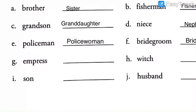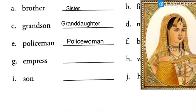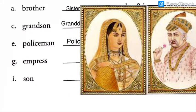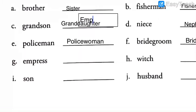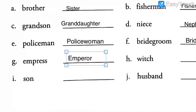Question G: empress. Empress means queen. So what is the word for the king — the male or opposite word of empress? The answer is emperor — E-M-P-E-R-O-R. Emperor is male, empress is female. I hope you are writing the answers.